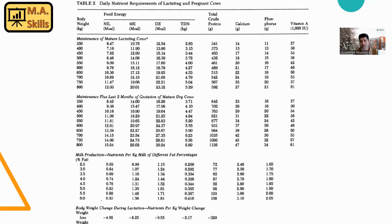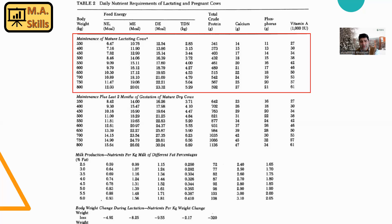So, the first step is to determine the nutrient requirements of the animal. We can use different tables from NRC — NRC stands for National Research Council, which is located in the United States. They publish nutrient requirements for different species, including dairy cattle. This is a relatively old table from NRC, and you can see different sections here.